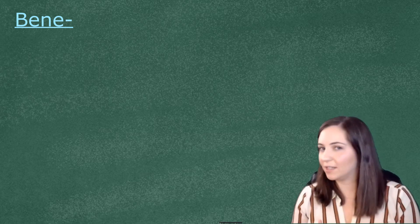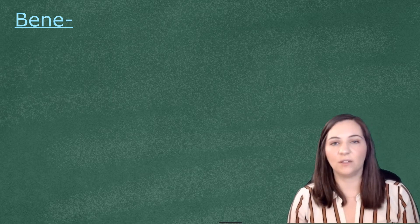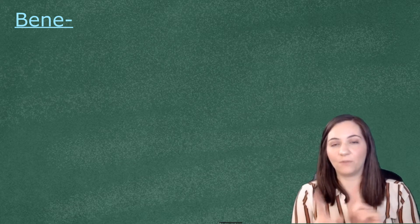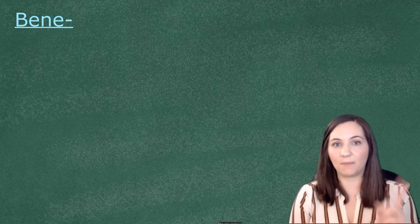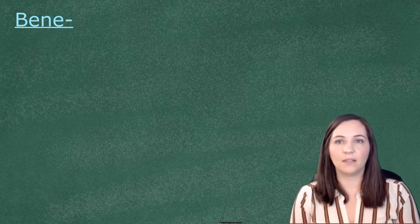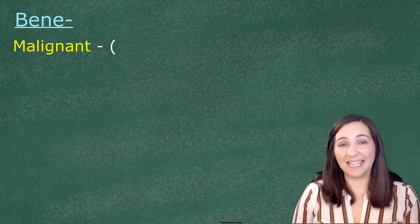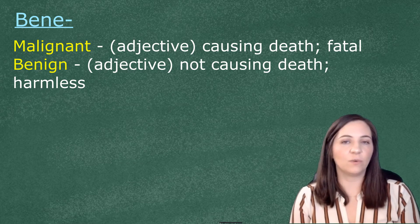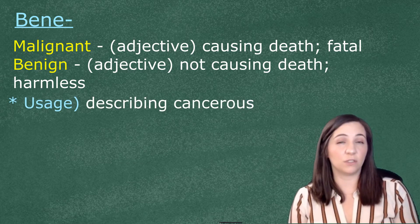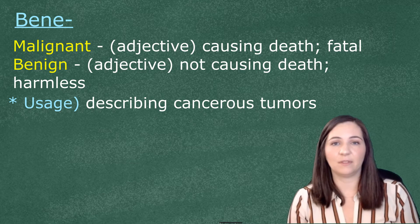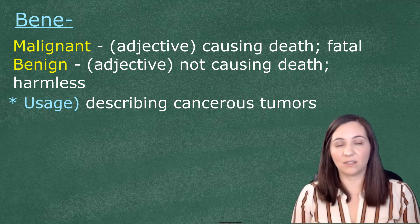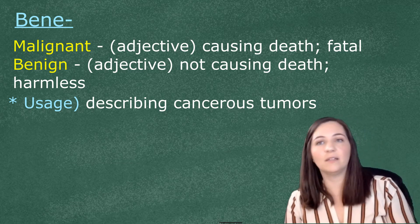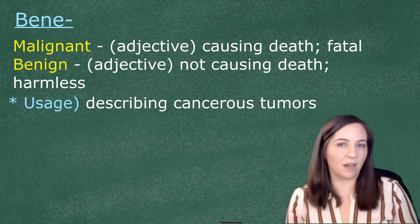Let's transition and talk about words that use 'bene.' We'll look at a pair of words that go together — one 'male' and one 'bene': 'malignant' and 'benign.' You mostly see these used to describe cancer. Malignant means that something is causing death or is fatal, and benign means it's not causing death — it's not harmful.